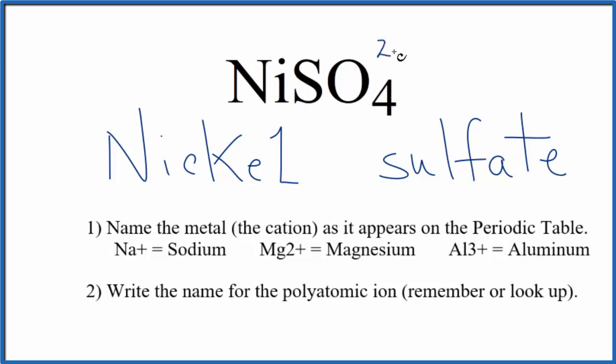The sulfate ion has an ionic charge of 2 minus. So if the sulfate ion is 2 minus, the nickel has to be 2 plus for the charges to balance out and give us a net charge of zero.